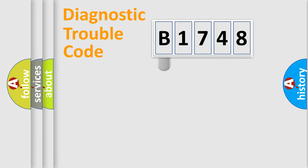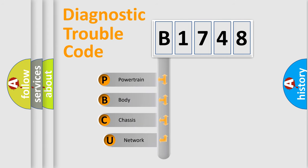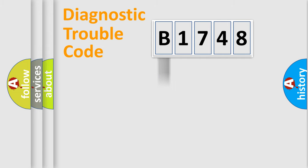Let's look at the history of diagnostic fault code composition according to the OBD2 protocol, which is unified for all automakers since 2000. We divide the electric system of an automobile into four basic units: Powertrain, Body, Chassis, and Network.